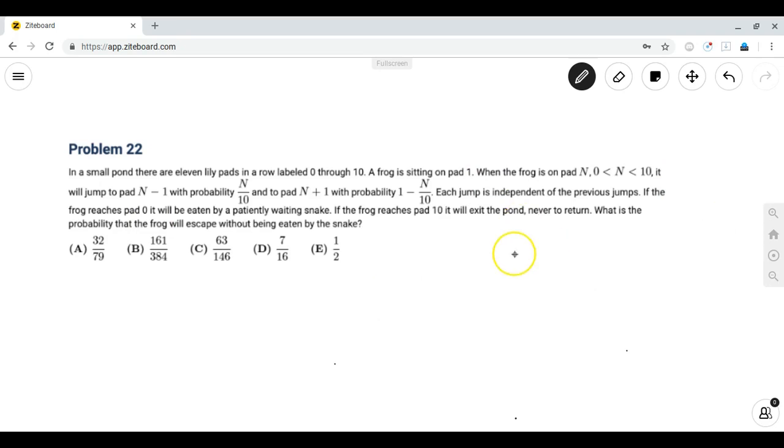These past two sentences were very important because these are what we're going to use to make our equations. The first sentence tells us the equation to relate pad n to pad n minus 1 and pad n plus 1. The second equation tells us that each jump is independent so we can just create the equations without worrying about other restrictions.